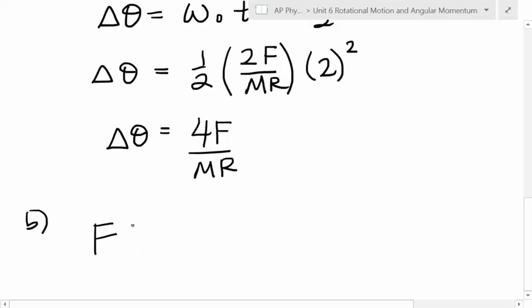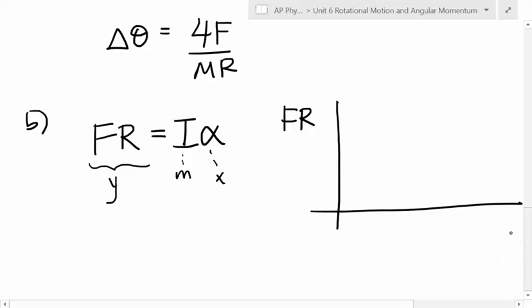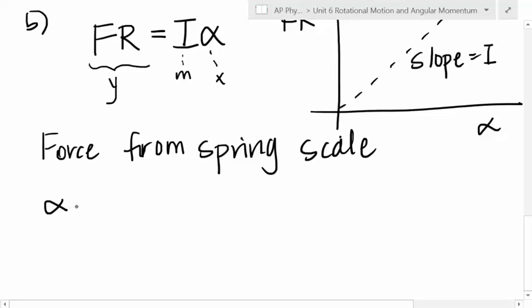So, I want to determine the moment of inertia. Well, I know that if I apply a force at the radius, that will cause the disc to rotate with an angular acceleration. So, because I am a ninja at doing graphs, that means that FR is kind of like in the position of Y and this would be like the M and this would be like the X. So, I could graph the force applied at the radius versus the angular acceleration. And the slope of that line would be the moment of inertia. Now, the force would be easy. I would use the force meter from the spring scale. That part is easy.